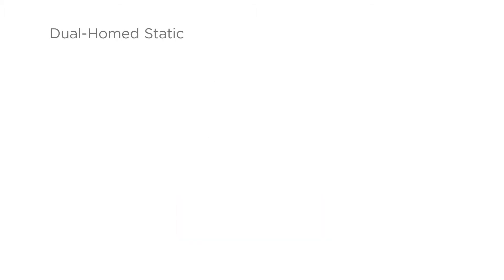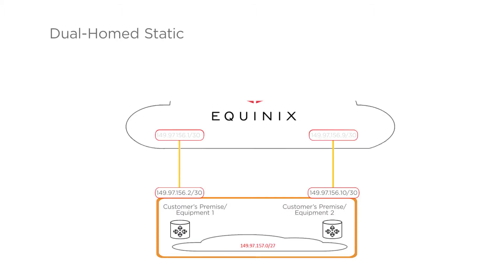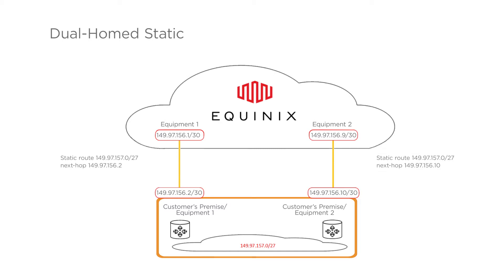Dual-homed static. For this configuration, Equinix will have a static route from each piece of equipment pointing to the next hop of the respective link. It uses the Juniper RPM real-time performance monitoring feature to ensure removal of the static route when the link to the customer is down. Equinix provides the following IP assignment for provisioning free of charge: for IPv4, two /30s; for IPv6, two /126s.